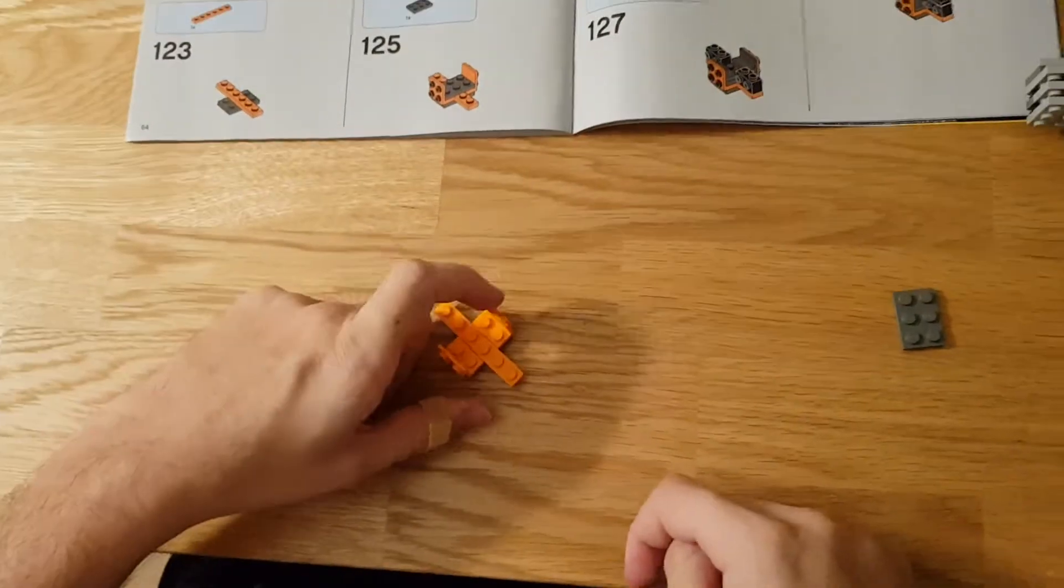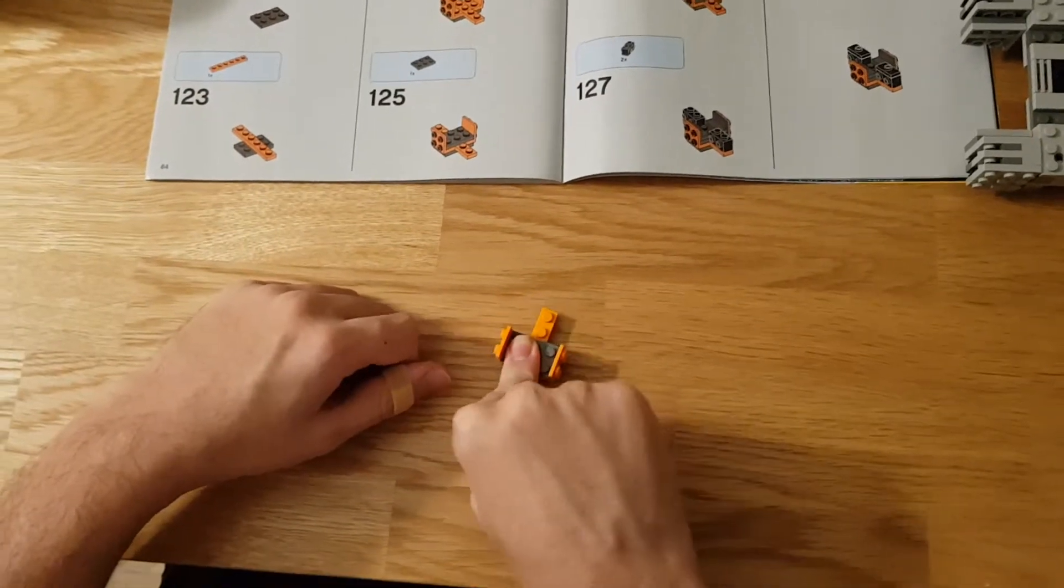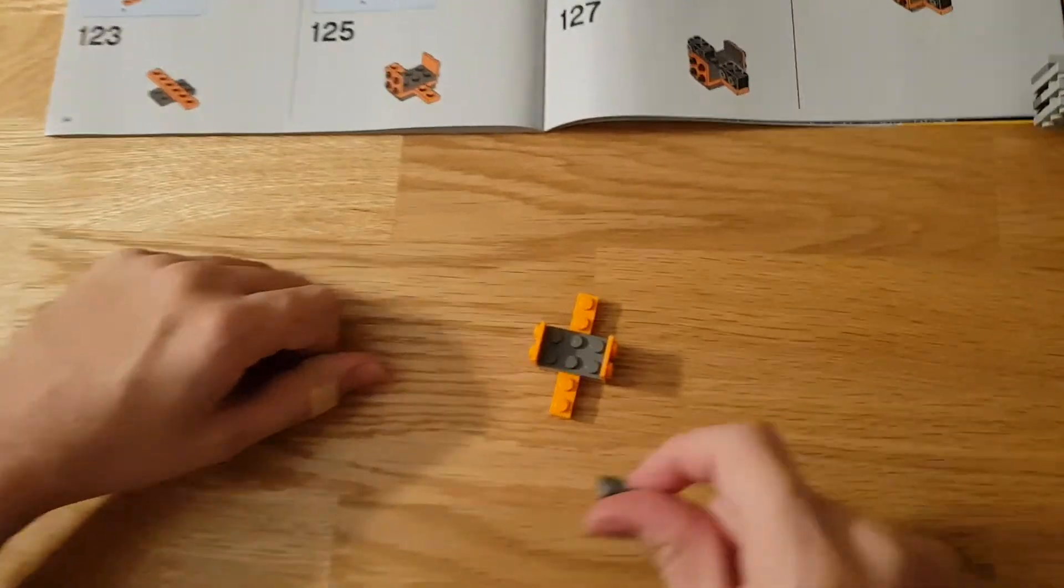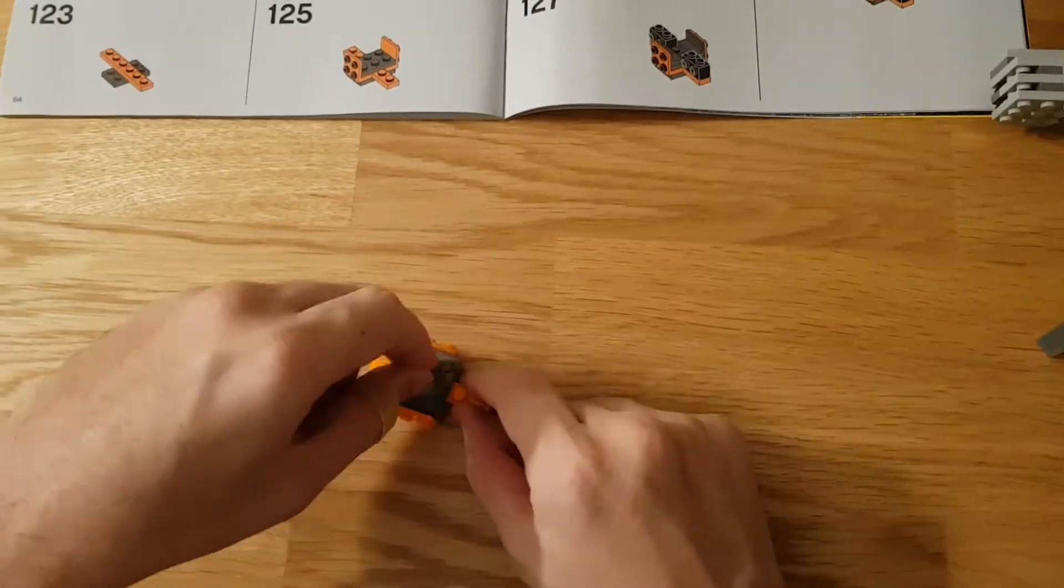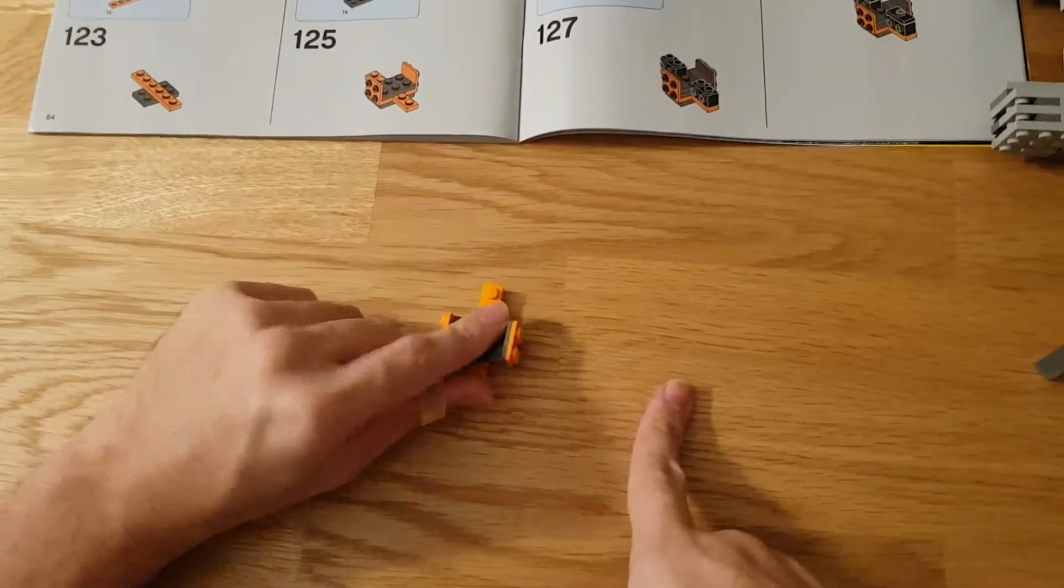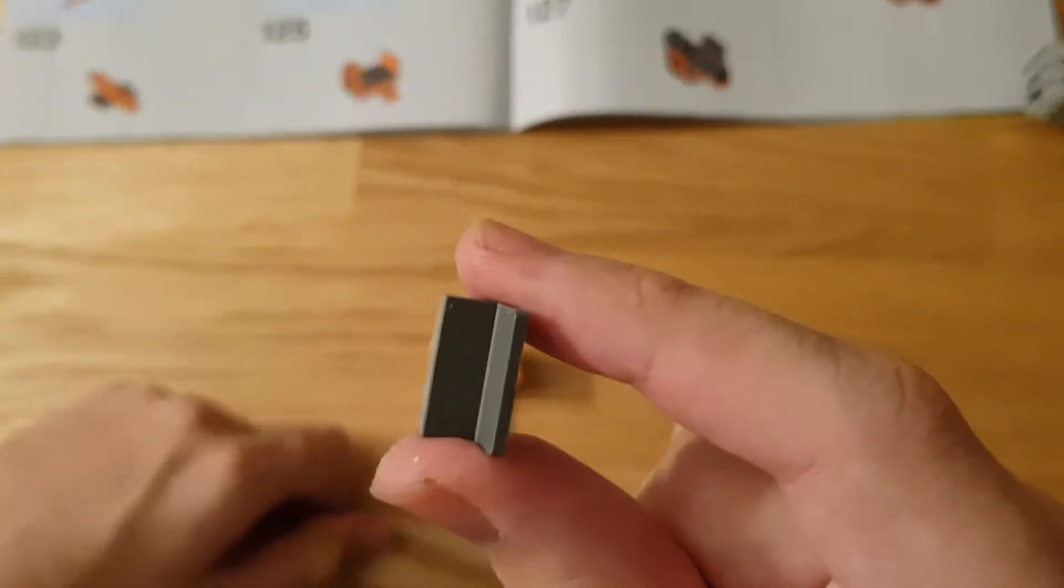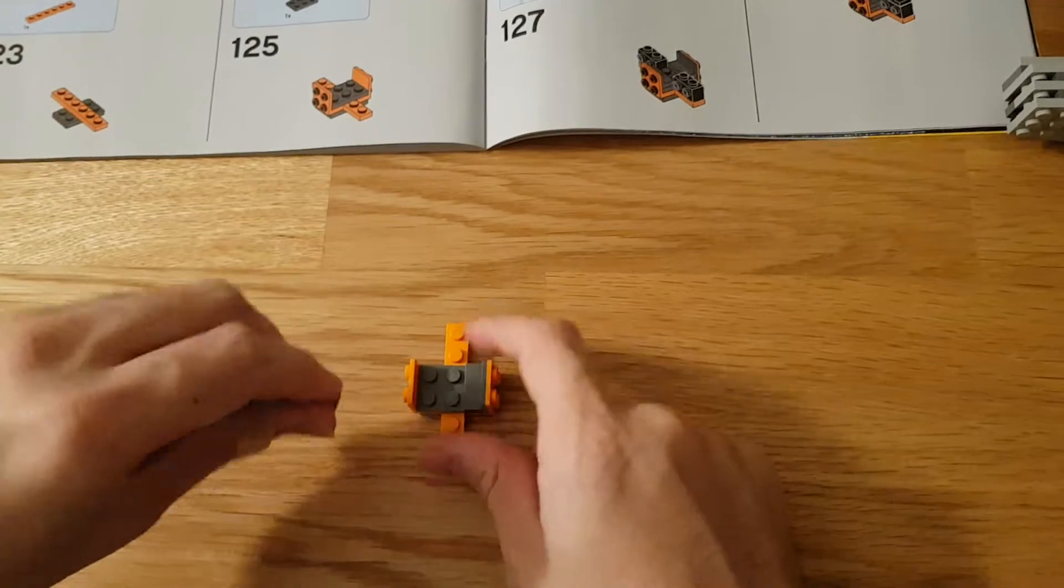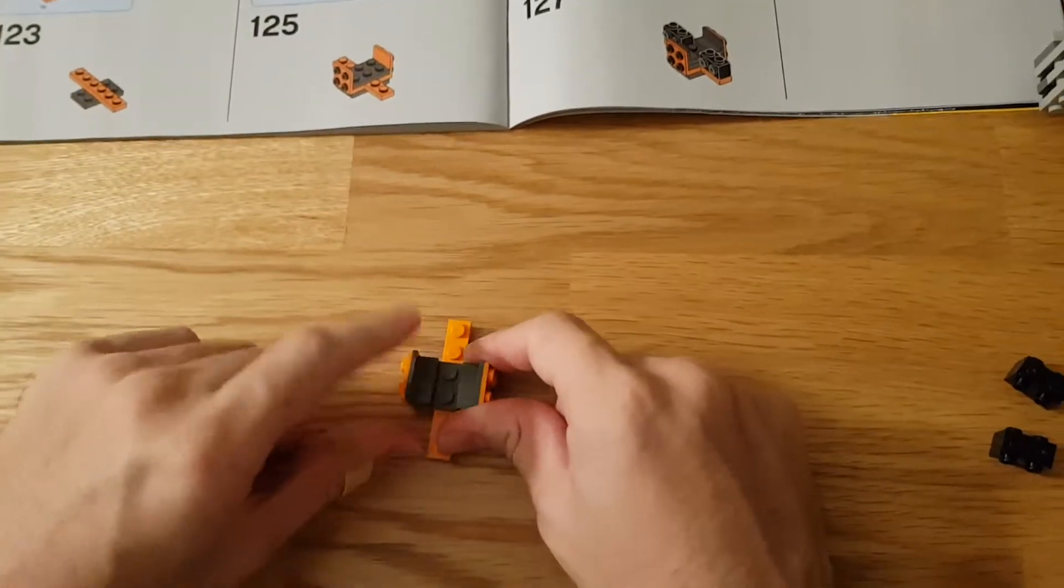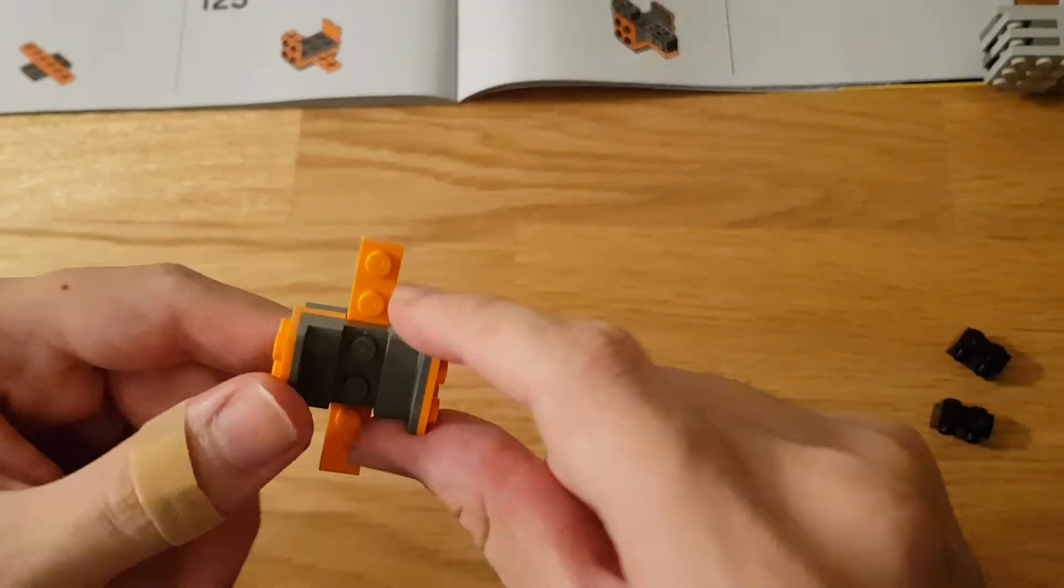So we continue with the next step, which is the grey piece of the inside of the box, and then the two side pieces, or protective, I think protective insides of the chest. And these are the pieces used. There, and it should look like this.